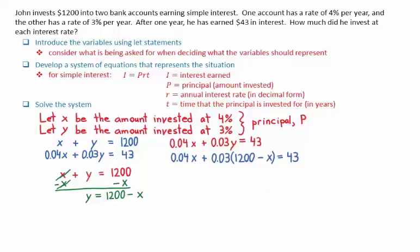We can distribute the 0.03 through the brackets, giving us 36 - 0.03x. We then subtract 36 from both sides after we combine the like terms. This gives us a result of 0.01x = 7.